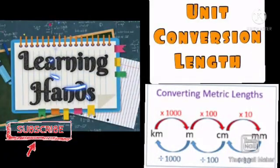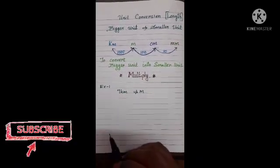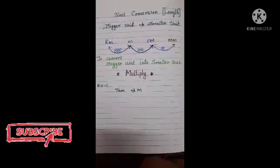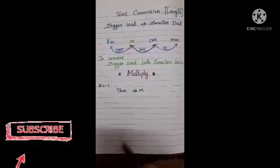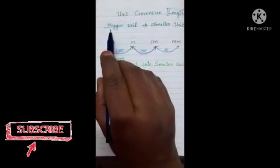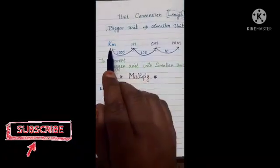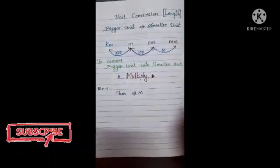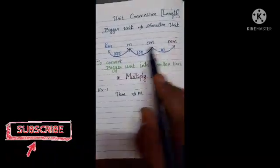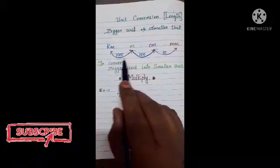Hi children! In this class we are going to learn unit conversion in length — that means how to convert bigger unit into smaller unit. The biggest unit is kilometer and the smallest unit is millimeter. So if you want to convert bigger unit to smaller unit, you have to multiply.